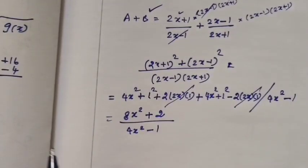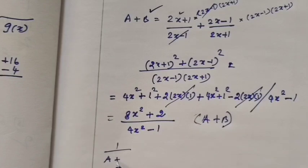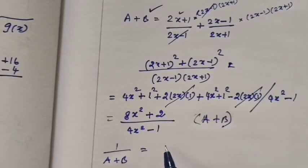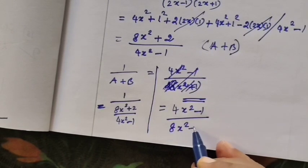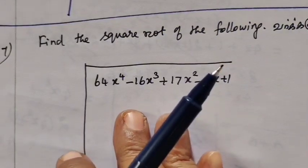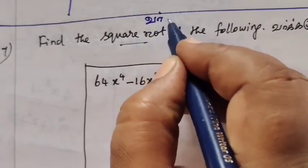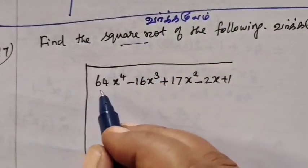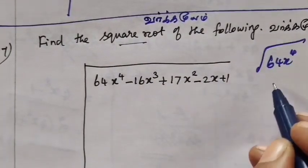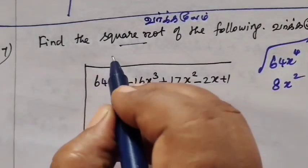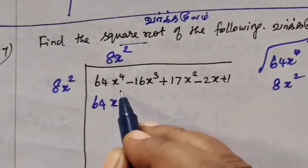Then a plus b, so this is a plus b. We need 1 by a plus b, so equal to its reciprocal: 4x squared, then 4x squared. Then cancel out. Then minus b, so this will cancel out. So this will be one time — 8x squared. Here is 8x squared. If you multiply this, it is 64x power 4.